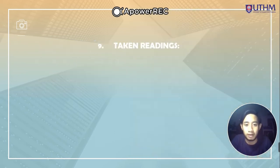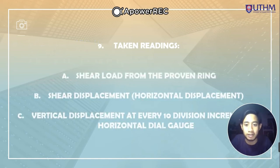Step number nine, the readings are taken. A, shear load from the proving ring. B, shear displacement which is horizontal displacement. C, vertical displacement at every 10 division in incremental horizontal dial gauge.